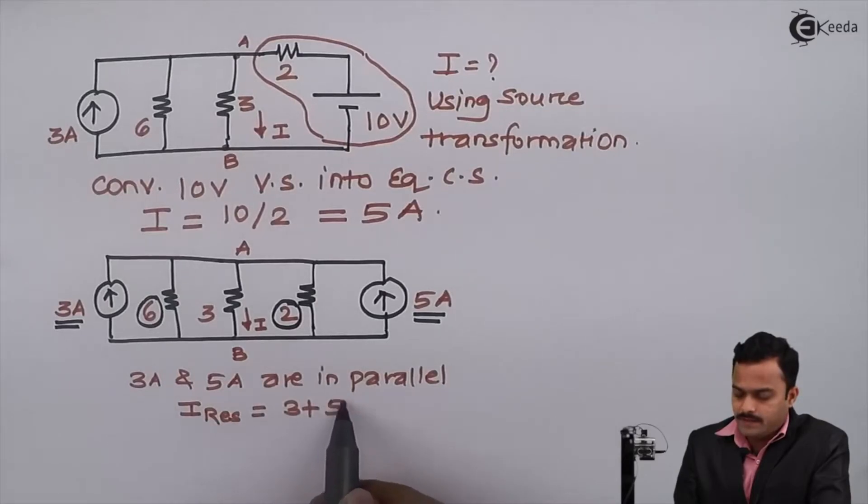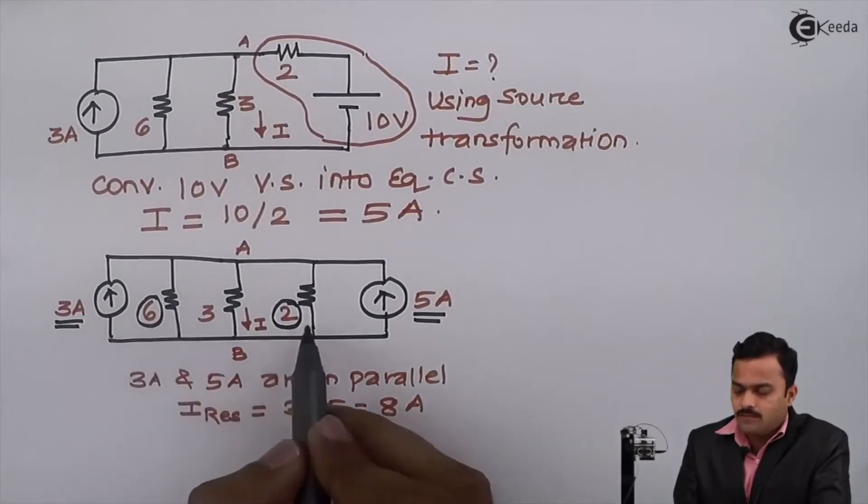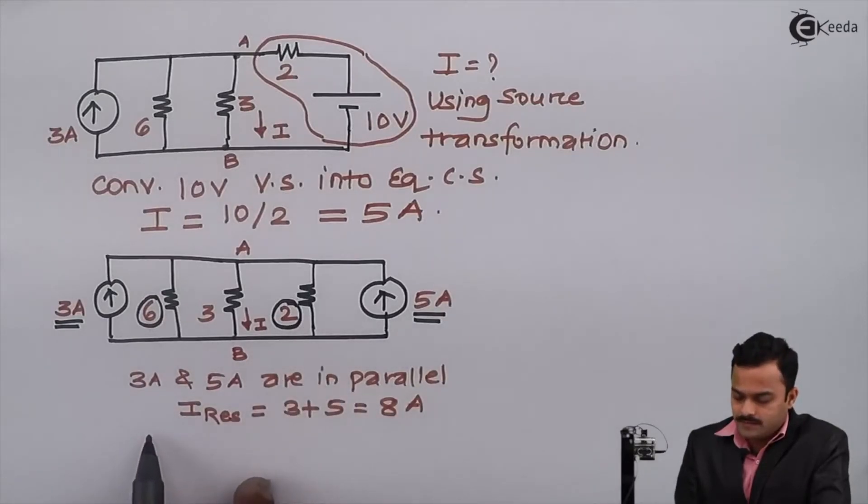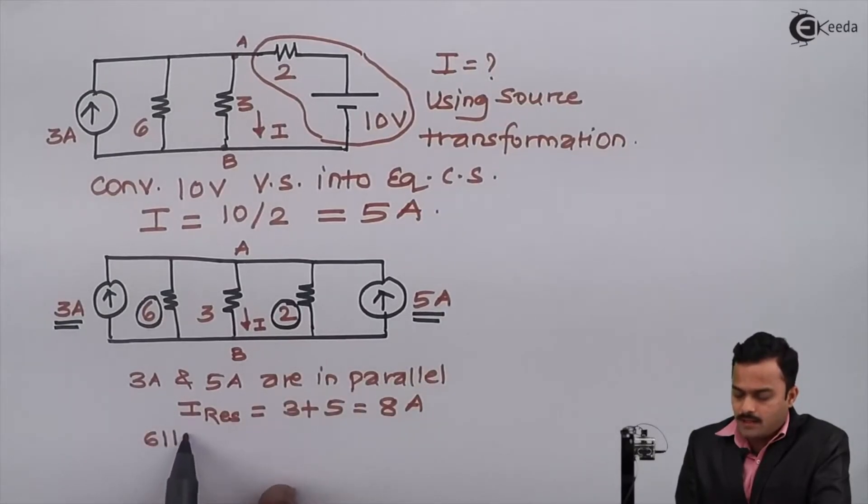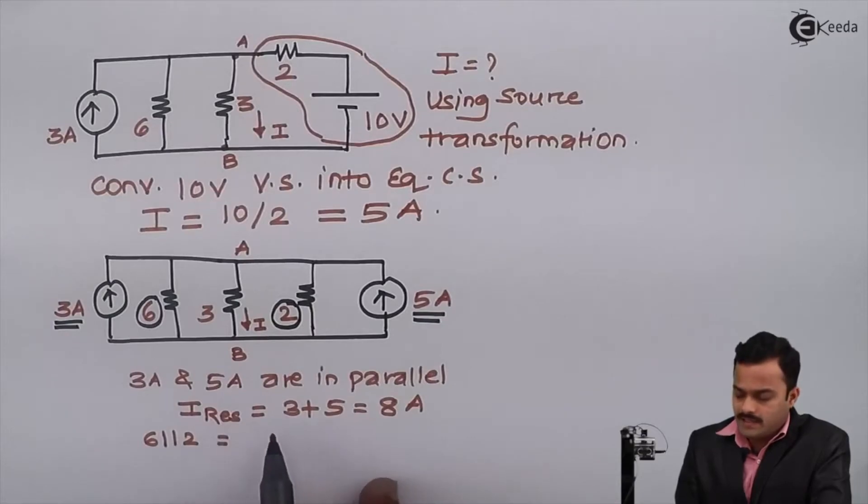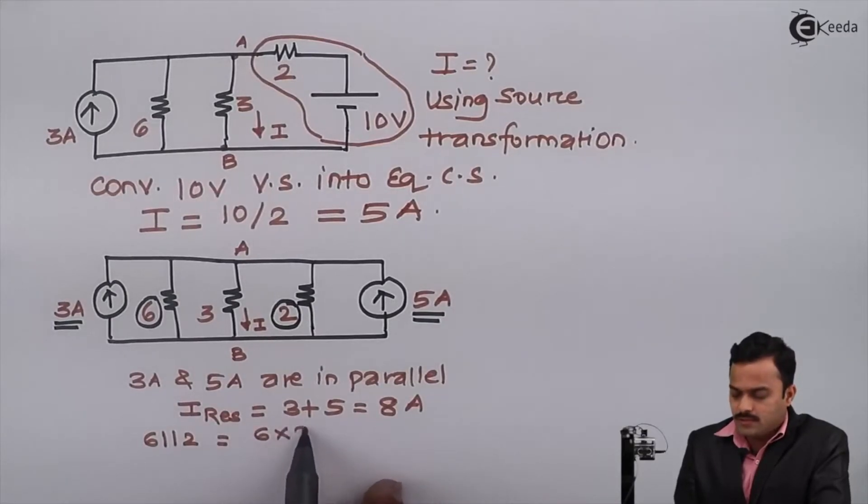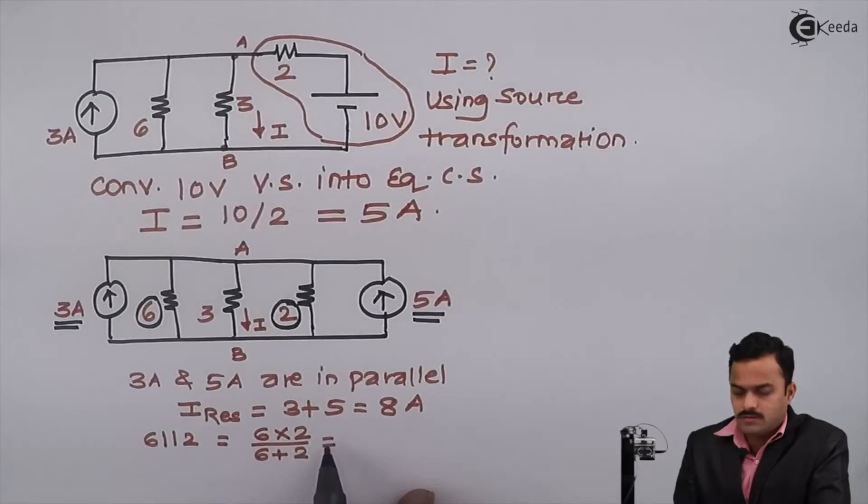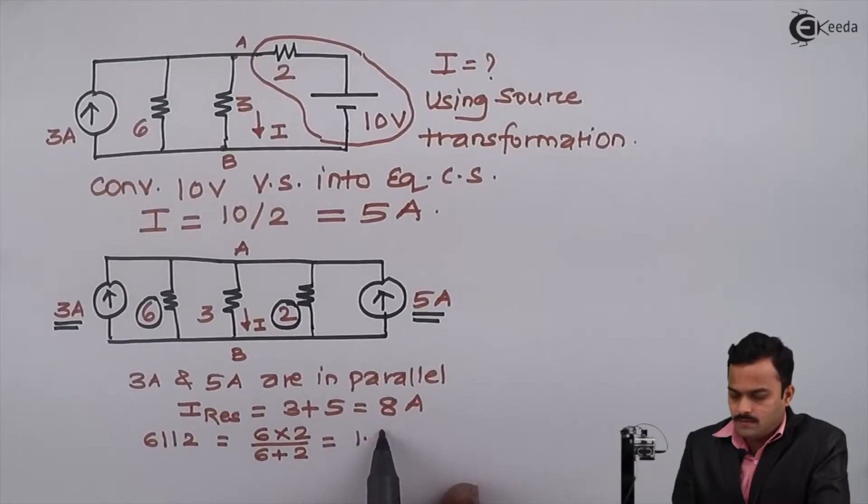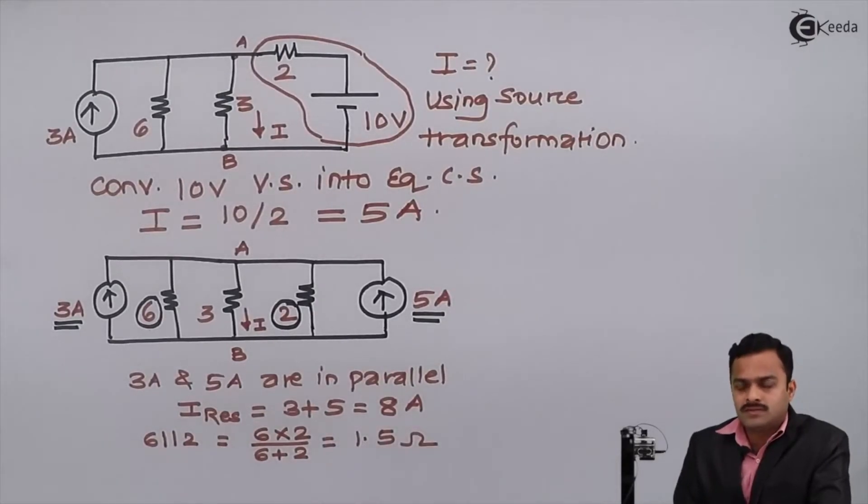And 6 ohm, 2 ohm in parallel—so 6 parallel to 2, I will get 6 times 2 divided by 6 plus 2, so I'll get 1.5 ohm. Now see how the circuit will be simplified.